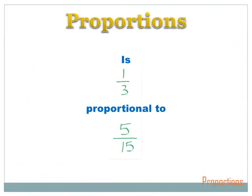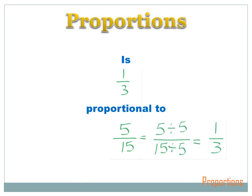Is one over three proportional to five over fifteen? Let's reduce the fractions to their lowest simplest form and see if they're equal. One over three — I can't simplify that, it's as low as it'll go. But I can simplify five over fifteen: I divide both the numerator and the denominator by five and get one over three. One over three equals five over fifteen, so those two fractions are proportional.